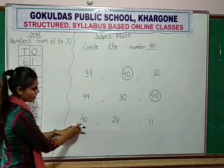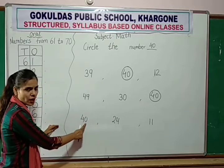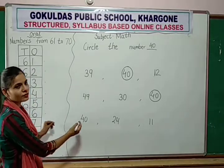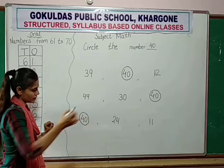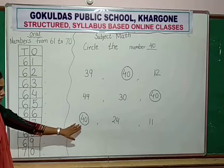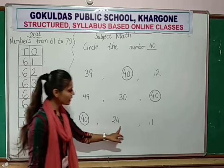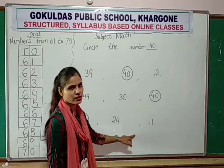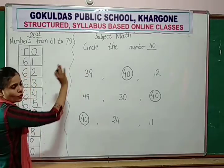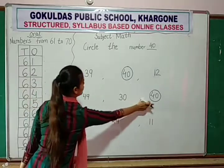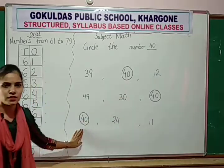Now next line. Here, which number is this? 40 is 40. So what are you doing? You circle the number 40. Circle it. Very good. Now next: 24 — don't circle. Now next: 11 — no circle. Only the number 40. So, 1, 2 and 3 — how many 40s are there? 3.